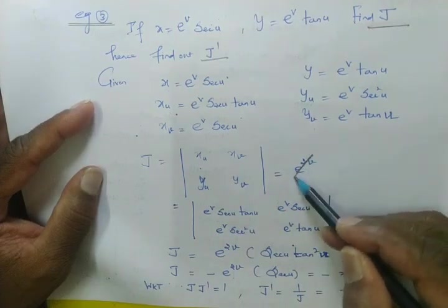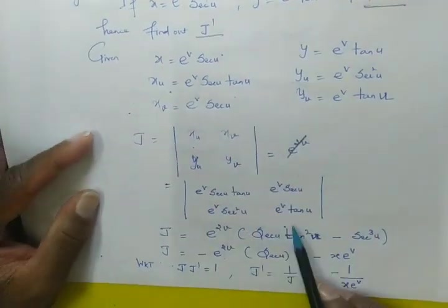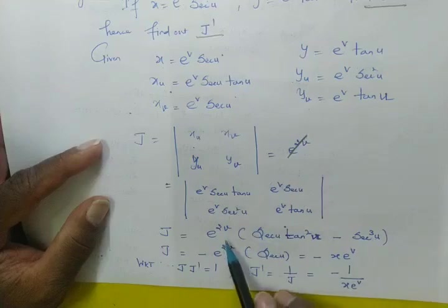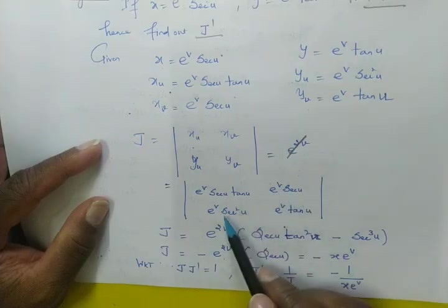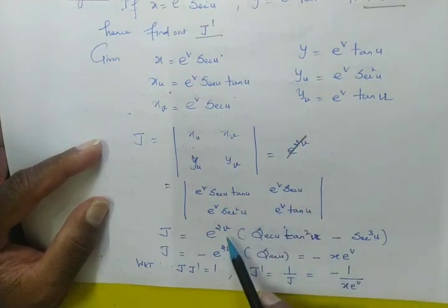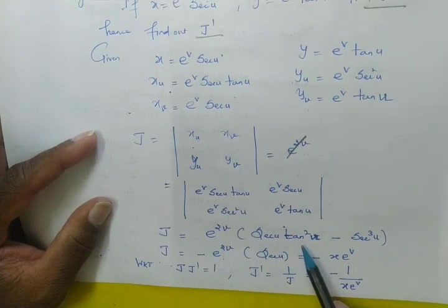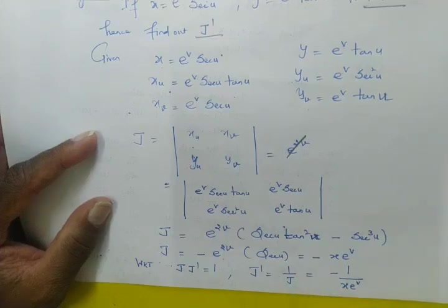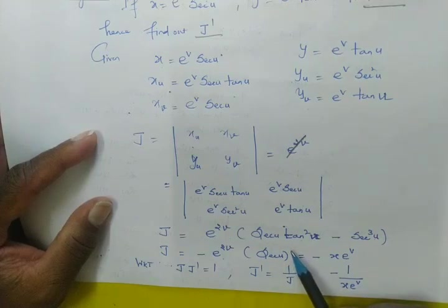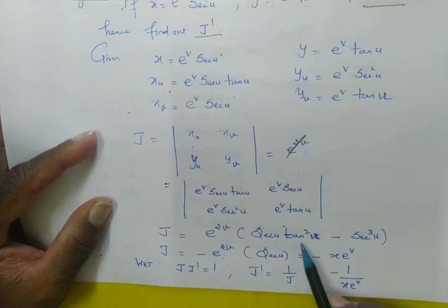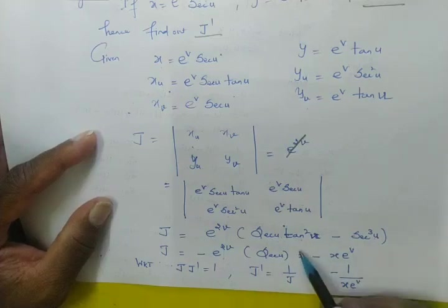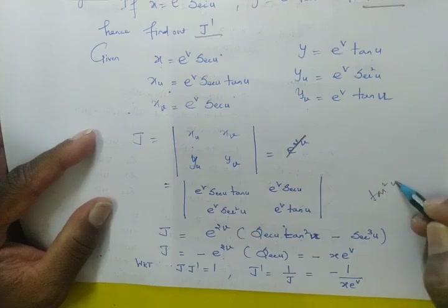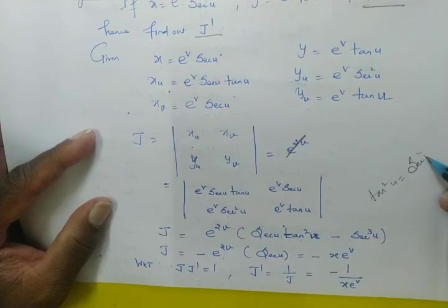In the Jacobian format — x_u, x_v; y with respect to u, y with respect to v — we substitute and expand: e^v times e^v gives e^(2v), then sec u times tan u, tan u, giving tan squared u. We get e^(2v) times sec cubed u plus e^(2v) times sec u times tan squared u. Since tan squared u equals sec squared u minus 1, substituting gives sec cubed u minus sec u, and simplifying yields the final result e^(2v) times sec u.